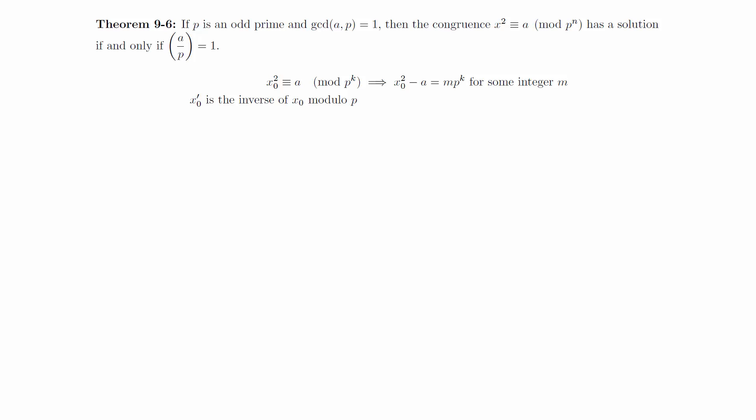Let x0' be the inverse of x0 modulo p. Then x0 times x0' equals 1 plus rp for some integer r. Given this collection of symbols, we claim that we can write down a solution to the desired congruence.